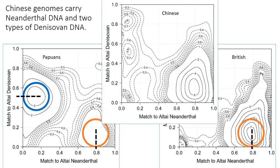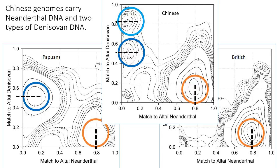Finally, let's look at the plot for Han Chinese from Beijing. On the right, we see the Neanderthal peak, but on the left, we have two Denisovan peaks. The lower peak is centred at the same place as the Denisovan peak in Papuans, with about 50% matching to the Denisovan genome, whereas the upper peak has over 80% matching to the Denisovan genome. That means that the upper peak represents ancestry from another group of Denisovans that was fairly closely related to the sequenced Denisovan individual.